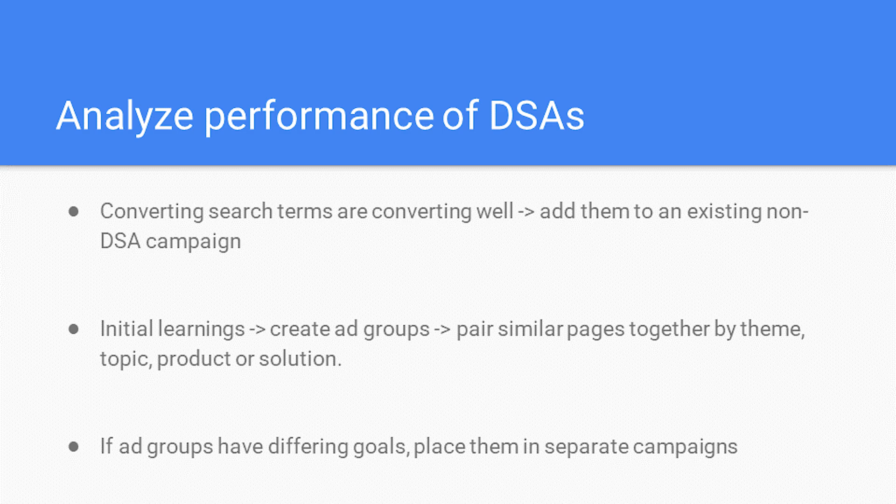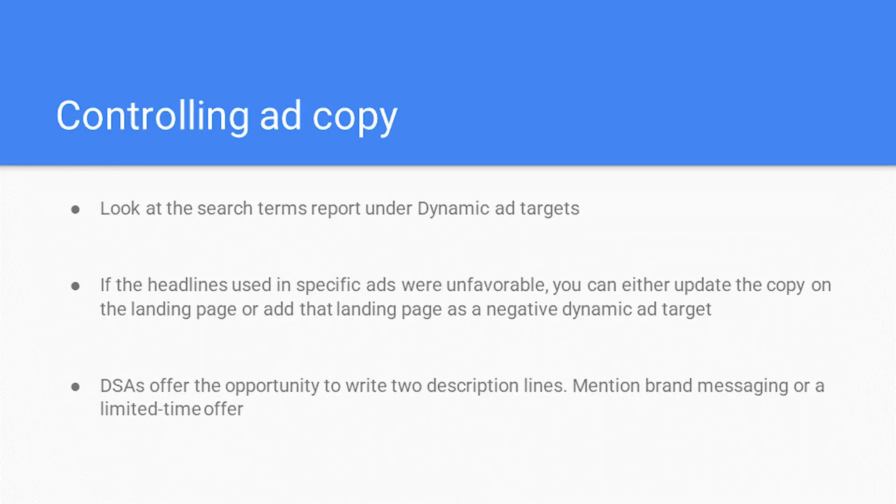Next up is how you can control ad copy. Lack of control over your ad copy can be concerning for any brand, but there are actions we can take to steer the reins just a bit. Take a look at the search terms report that falls under dynamic ad targets. This important report shows the search term an ad showed for, the headlines used in the ad copy, and the landing page that was served. If the headlines used in specific ads were unfavorable, you can either update the copy on the landing page or add that landing page as a negative ad target. You can also choose to only serve certain landing pages as ad targets. DSAs also offer the opportunity to write two description lines, where you can include specific brand messaging, a limited time offer, or any other necessary verbiage that needs to be shown to the user.